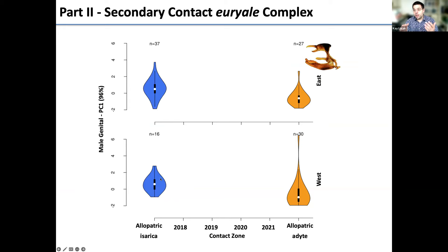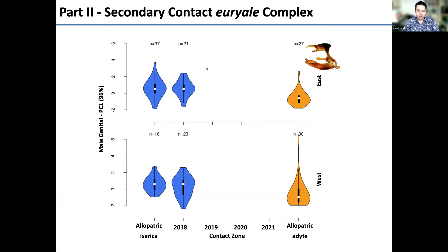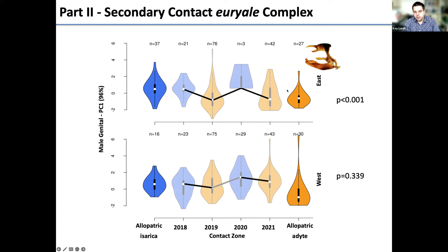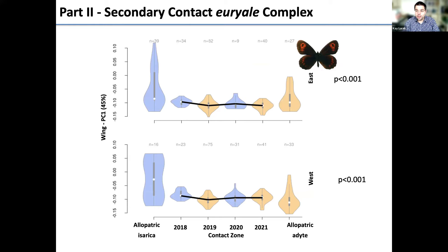Starting with morphology — male genitalia PCA — allopatric populations differ but with some overlap between the two subspecies. At the eastern contact zone in 2018, most individuals looked like allopatric isarica, which was puzzling. In 2019, there was a phenotypic shift toward adita-like individuals. In 2020, isarica-like again; in 2021, adita-like phenotypes. This year the data show isarica-like again. So we have significant year-to-year phenotypic shifts — primarily isarica-like in even years and adita-like in odd years — for both male genitalia and wing shape.